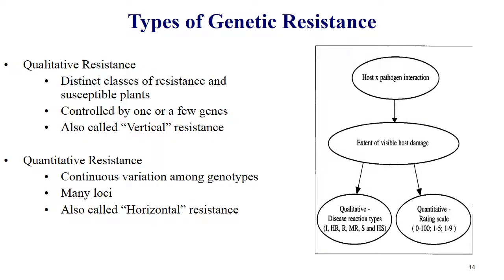Coming to types of genetic resistance: qualitative and quantitative. When host and pathogen interact, the extent of visible host damage is assessed. Qualitative resistance disease reaction types are: immune, hypersensitive response, resistance, moderate resistance, susceptibility, and highly resistant. Quantitative resistance uses a rating scale like 0–100 or 1–5 or 1–9. Qualitative resistance has distinct classes controlled by one or few genes — also called vertical resistance. Quantitative resistance shows continuous variation controlled by many loci — also called horizontal resistance.